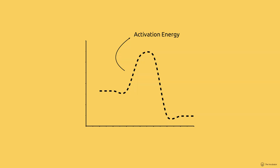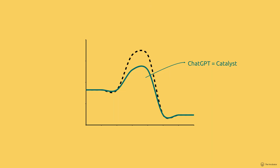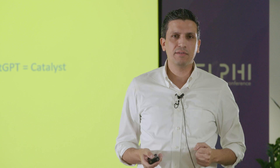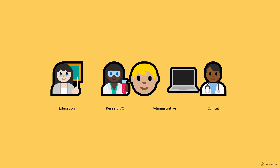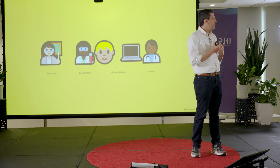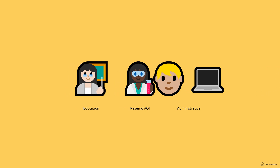It reminds me of chemistry — the activation energy principle, where a chemical reaction needs a little energy to get over the activation hump and produce a product. As we learn in chemistry, activation energy can be lowered with catalysts. ChatGPT is exactly that catalyst. Practically speaking, there are areas of our careers — education, research and QI, administrative tasks, clinical work — where this applies. Because of its limitations, I'm not comfortable bringing ChatGPT to the bedside to make decisions about a baby's life. But for everything else, it's kind of cool.